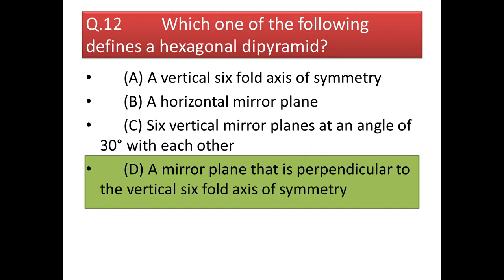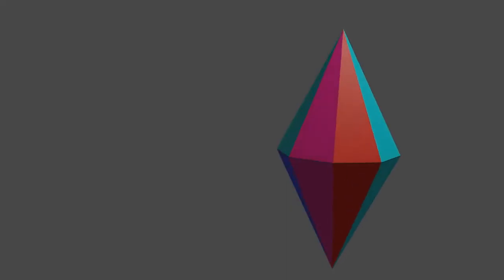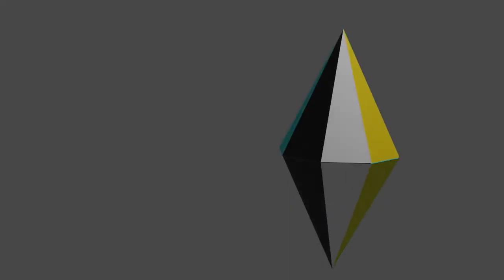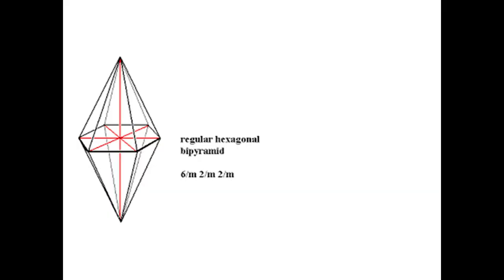Next question: which one of the following defines a hexagonal dipyramid? The answer is a mirror plane that is perpendicular to the vertical six-fold axis of symmetry. In the figure you can see a hexagonal dipyramid, and there is a six-fold axis of symmetry with a mirror plane at the center perpendicular to the six-fold axis.